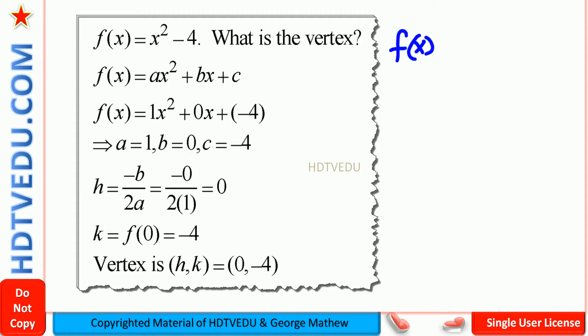We are given the function f(x) equals x squared minus 4. We compare this with f(x) equals ax squared plus bx plus c. Immediately, you see that there is no x term, so b is 0.